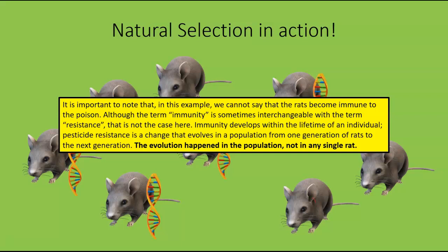It's important to note that the rats did not become immune to the poison. Immunity and resistance are often used interchangeably but they are different. Immunity develops within a lifetime of an individual's consistent exposure to a pathogen, whereas pesticide resistance is a change that evolves in a population from one generation to the next. Evolution happened in the population, not in any single rat. It is impossible for a single organism to evolve — single organisms can adapt, mutate, or become more or less fit, but populations evolve.